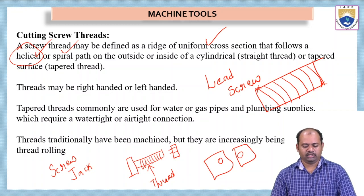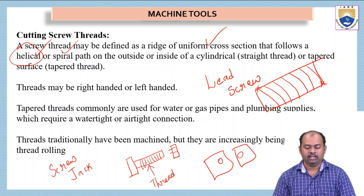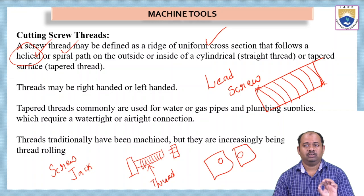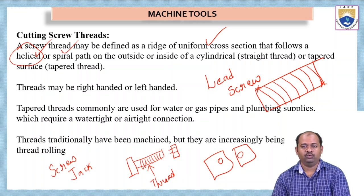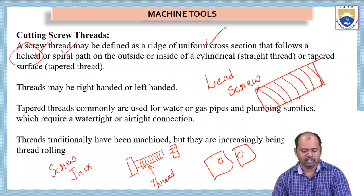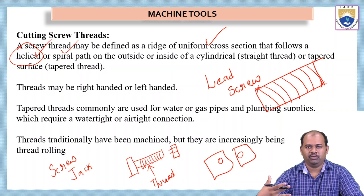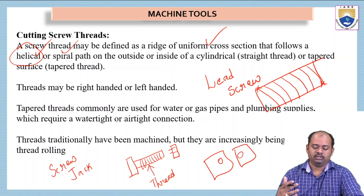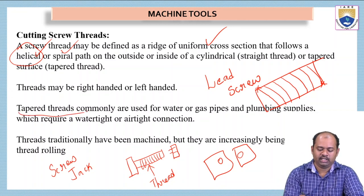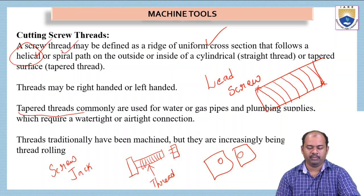Taper threads are commonly used for water or gas pipes and plumbing supplies. We use taper threads when we need pipes for water or gas and also plumbing supplies which require a watertight or airtight connection. When we want this type of connection, we should always go for taper threads. Taper threading is done in order to get a tight finish.